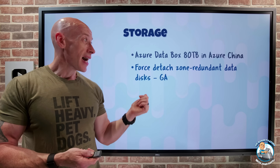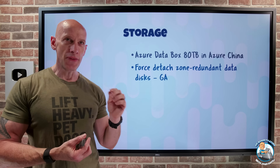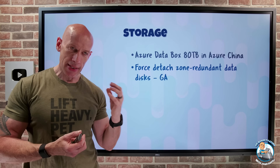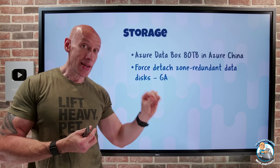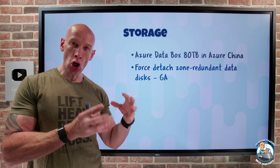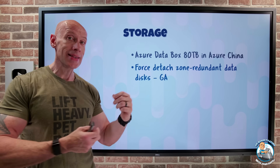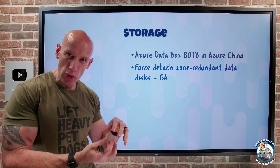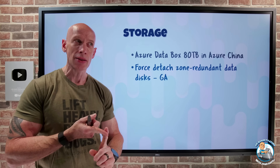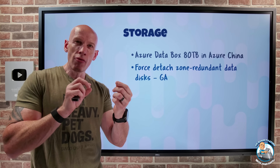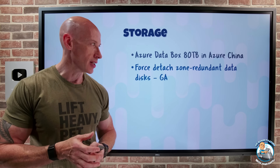Forced detach of a zone-redundant data disk is now GA. So with ZRS disks, providing it's a data disk and not an OS disk, if there is a zone failure, I can force detach that data disk, which means I can then go and use it and attach it somewhere else for my VMs and virtual machine scale sets. That will reduce my recovery time objective if there are zone outages.